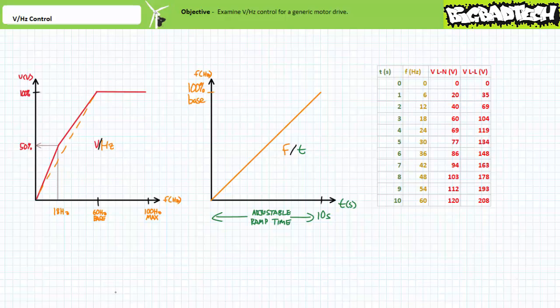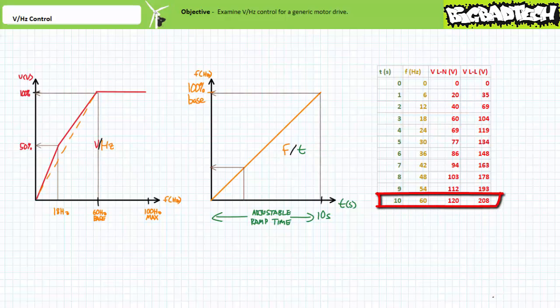Given a dual slope torque boost volts per hertz profile with our previously established values of a plus 20 percent boost to 18 hertz, and the same linear acceleration profile where excitation frequency is ramped to 100 percent of the base frequency over an acceleration time of 10 seconds, we can calculate applied voltage and excitation frequency at specific times. For example, if it takes three seconds to ramp up from zero to 18 hertz, it takes three seconds for voltage to go from zero to 50 percent. Then it takes the remaining seven seconds for excitation frequency to go from 18 to 60 hertz, at the same time applied voltage goes from 50 to 100 percent.